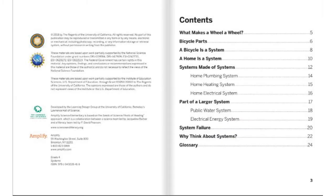Here we have the table of contents. We can see that on the fifth page, what makes a wheel is what we'll be discussing. So then we will look at bicycle parts and a bicycle system. As you read that, think about the function of each bicycle part and what it has to do in order to make the bicycle work.